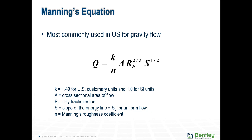For Manning's equation, basically all we need to input is the roughness coefficient N. There's already a table that has been generated — this is an empirical method. In the lab, several tests were done to come up with these N values. Everything else is dependent on the information you've input for your pipes, such as the cross-sectional area of flow, hydraulic radius, and slope of the energy line. So really, all we need to input is this N.